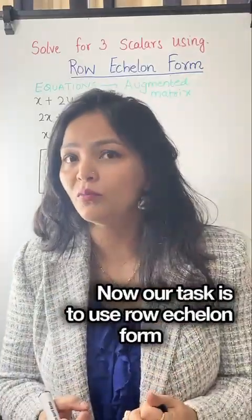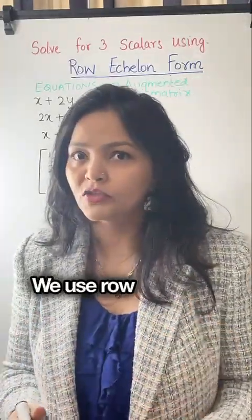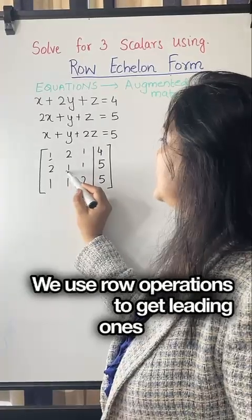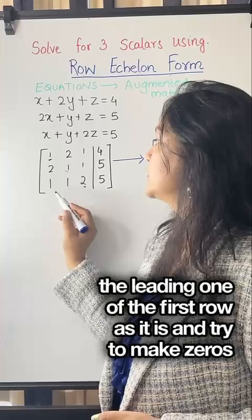Now our task is to use row echelon form in order to find the value of x, y, z. We use row operations to get leading ones and zeros below them. Keep the leading one of the first row as it is and try to make zeros below it.